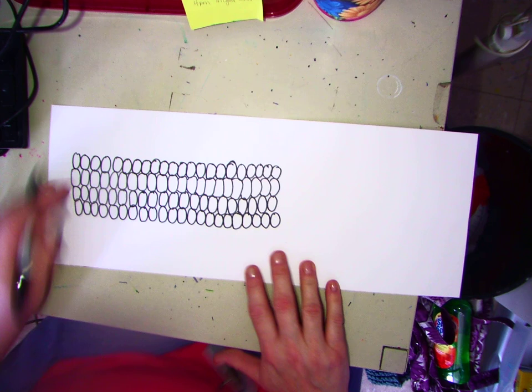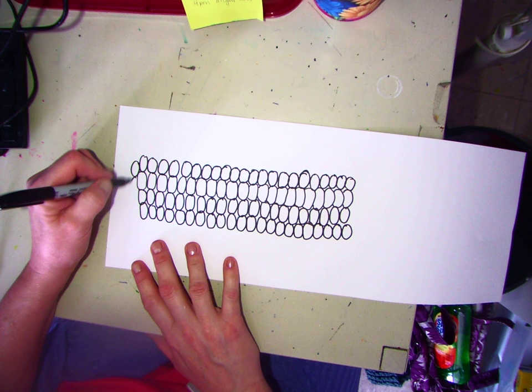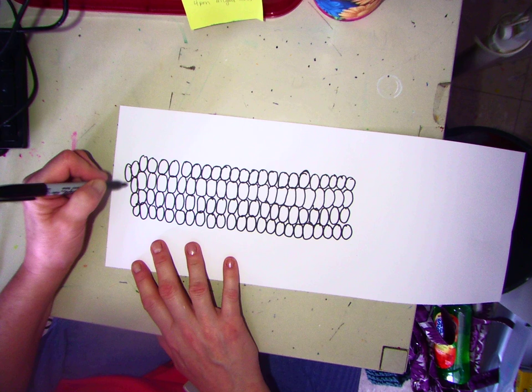So down here at the end, I'm going to make this a little bit rounder because usually the end of corn is kind of round. So I'm going to add a few more down here at the end so it has a round shape.